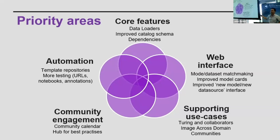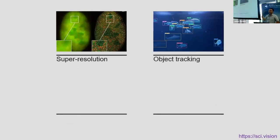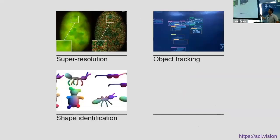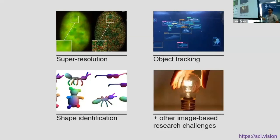We would also like to support use cases, which is why we are presenting to the UK environmental community and encouraging you to share any computer vision tasks, datasets, or models you have. SciVision is funded for the next three years, and we are aiming to have more examples of super resolution, object tracking, and other use cases, as well as addressing challenges common across domains and all other image-based research problems.